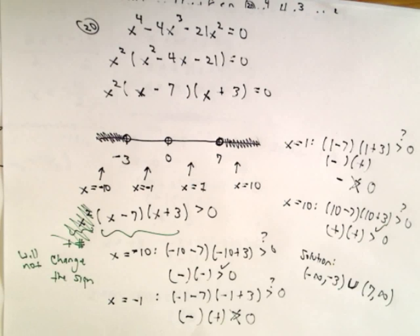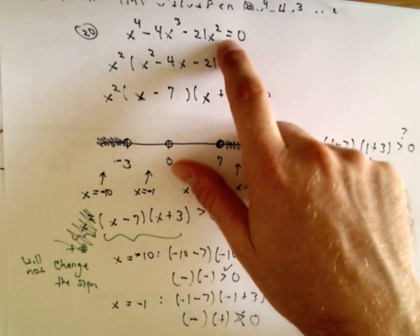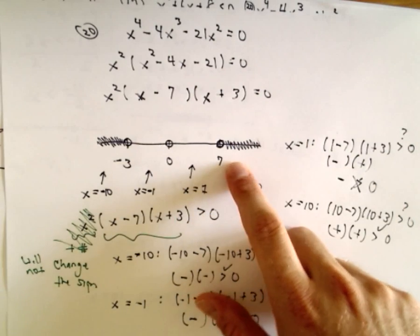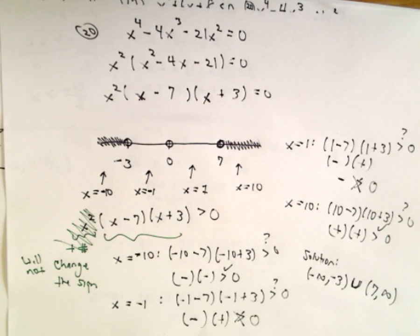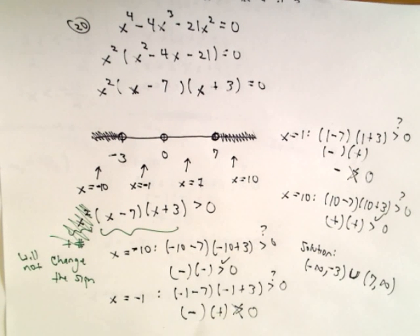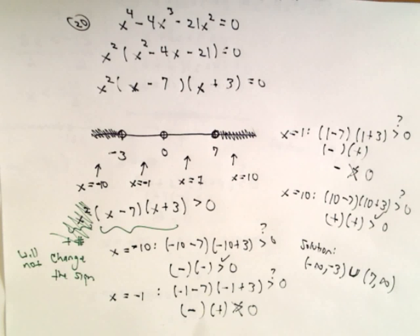If you have 5 distinct zeros, you would have 6 intervals to check. So this is the basic idea with inequalities: make one side equal to zero, solve the corresponding equation, put them on a number line, check those values themselves, and then pick a number from each interval and test it in the original inequality. For rational equations, we'll figure out where it's equal to zero or undefined, then do the same thing — make number lines and test intervals.